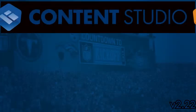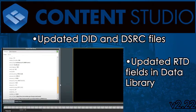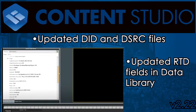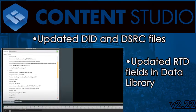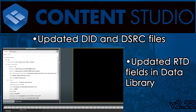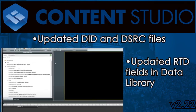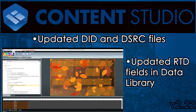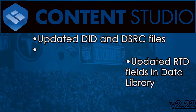Now we'll look at some updates to Content Studio. Version 2.22 updated the DID and DSRC files in the installer, and this means that you will see updated RTD fields in the data library.